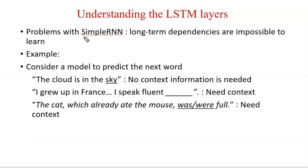In the last lecture we studied simple RNN. Simple RNN is used when working with sequential data, for example text, where word sequence is important. But simple RNN suffers from the problem of long-term dependencies — when we have long-term dependencies, simple RNN is not working efficiently and not showing better results. So we have to use Long Short-Term Memory layers, LSTM in short.